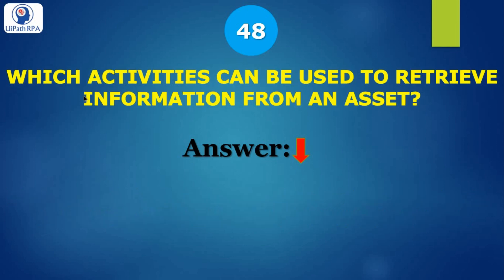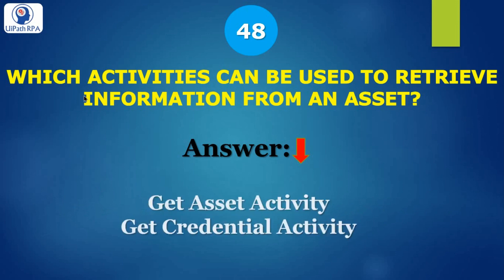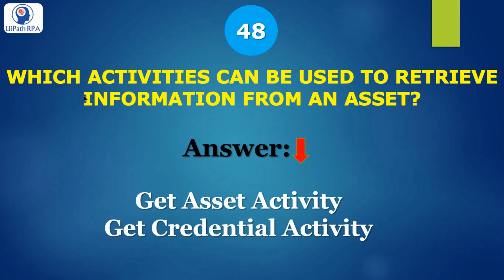Question 48: which activities can be used to retrieve information from an Asset? We have the Get Asset activity, which is used to retrieve assets like numbers, text, boolean values, etc. But we also have another activity called Get Credential, which only retrieves credential assets.